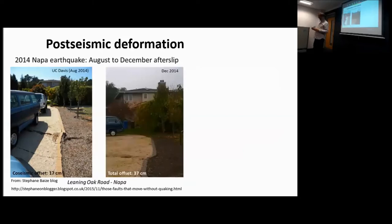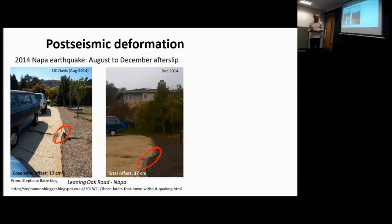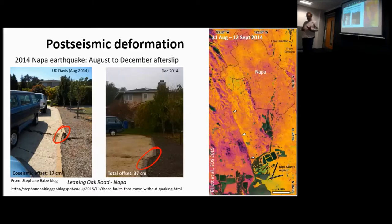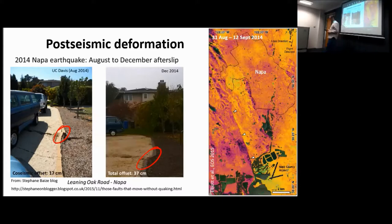For the first part, I'll start by thinking about post-seismic deformation. These two photographs from Stefan Bayes's blog were taken after the Napa earthquake in August 2014 — one immediately after by a team from UC Davis, and one by Stefan a few months later. You can see the same curbstone in both, gradually offset: a displacement of 17 centimeters in the first, growing to 37 centimeters by December. We can see the same observation in a 12-day interferogram from a paper by John Elliott, showing a beautiful knife-cut through the interferogram — slow creep localized on the shallow part of the fault.